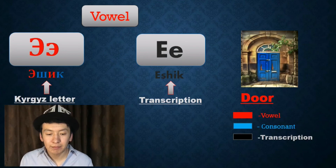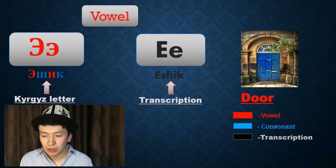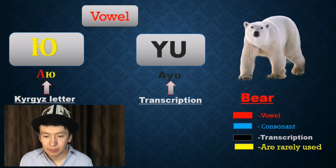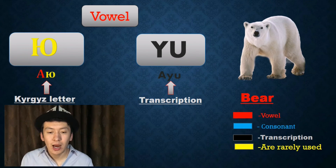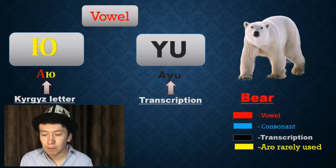Ә — Ешik, Door. Next one: Ю — for example, Bear.